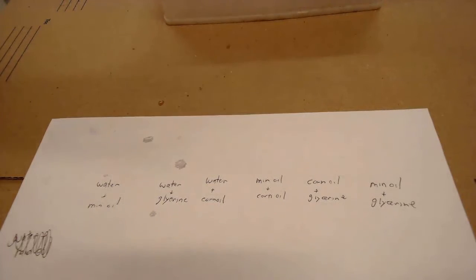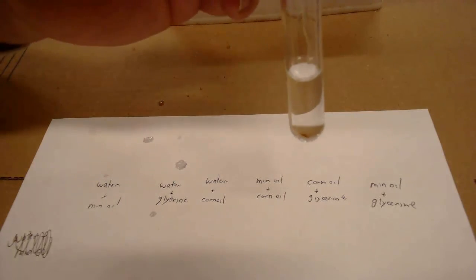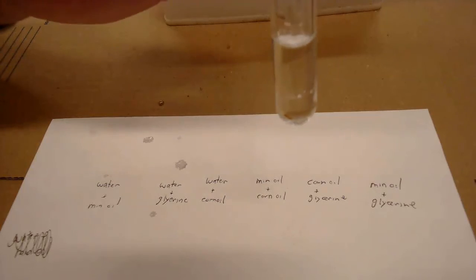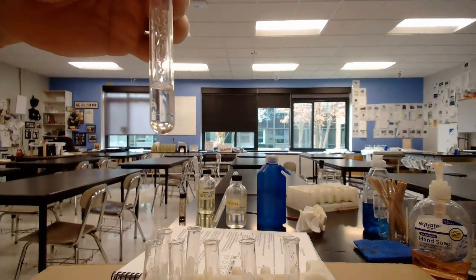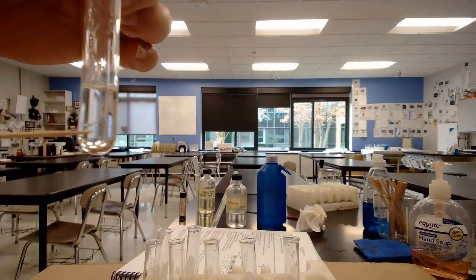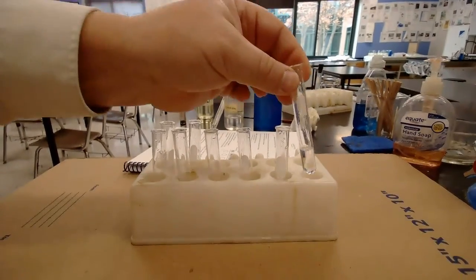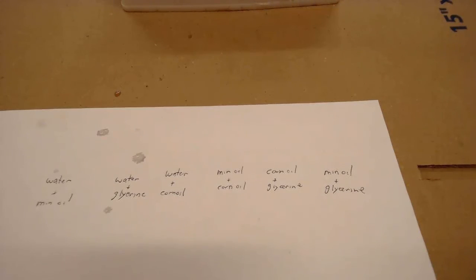And the last one is mineral oil and glycerin. We mix those two together. When you take a quick glance at it, you might be able to see a line right down here. Hold it up to the light — see that little line right there? Really hard to see because they're both about the same color, but right about there is where they separate. So they are not mixing together. Those are your results for the second part of the lab. Now watch the second video — it will help you interpret what you just saw.